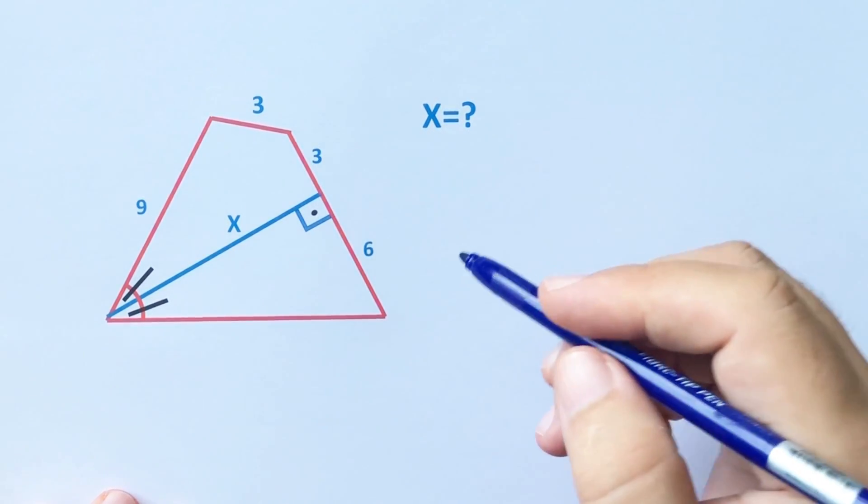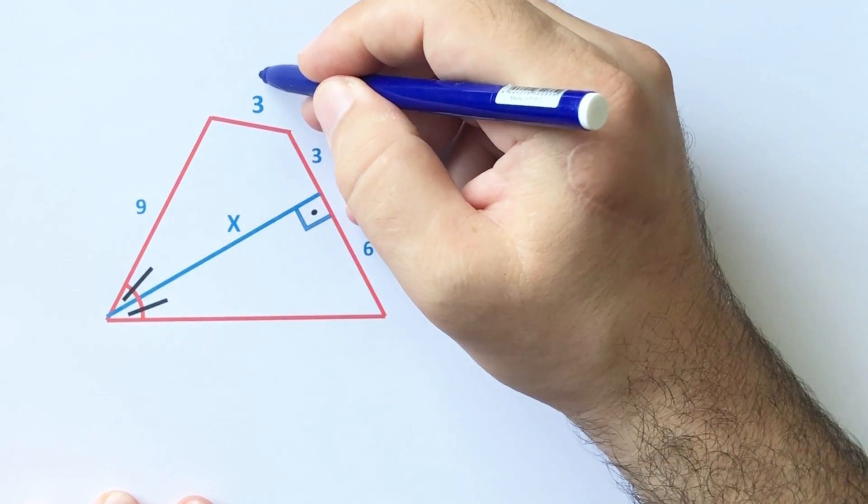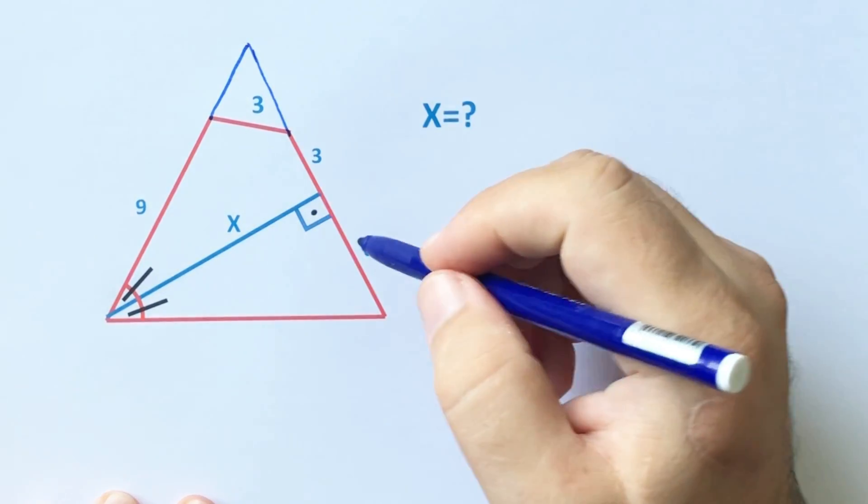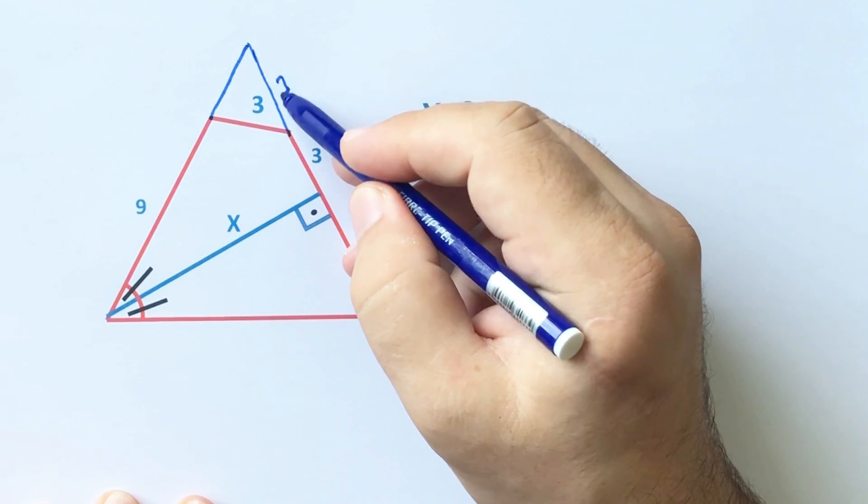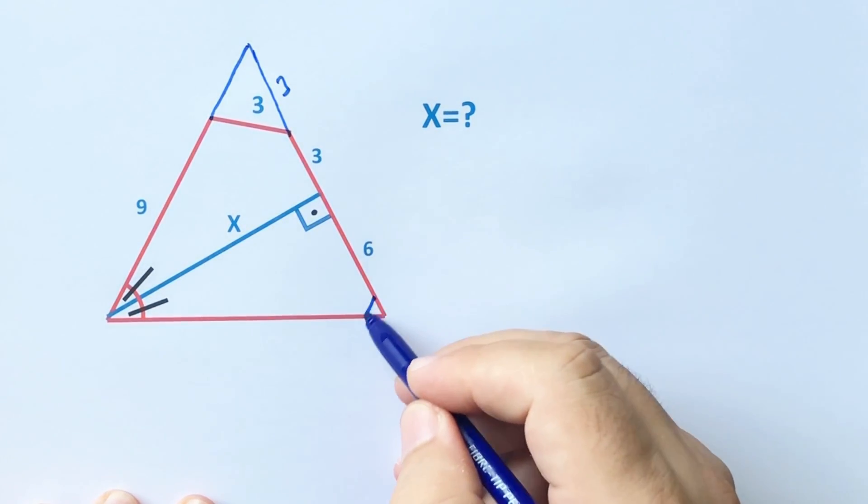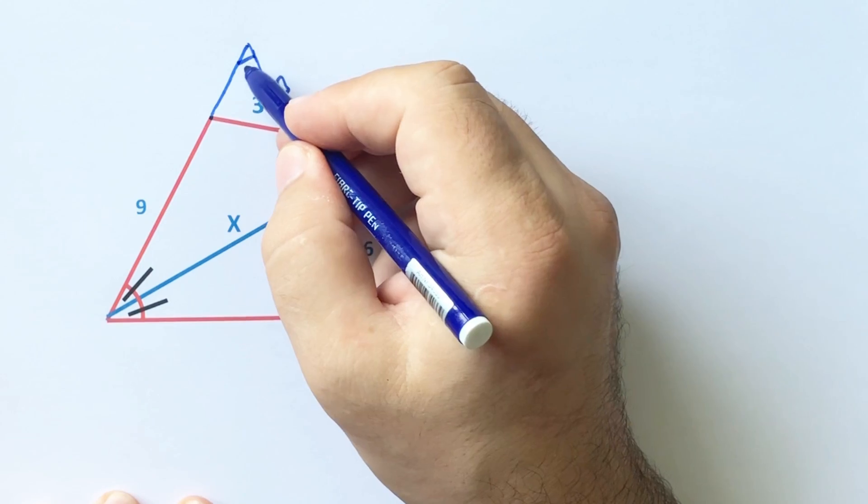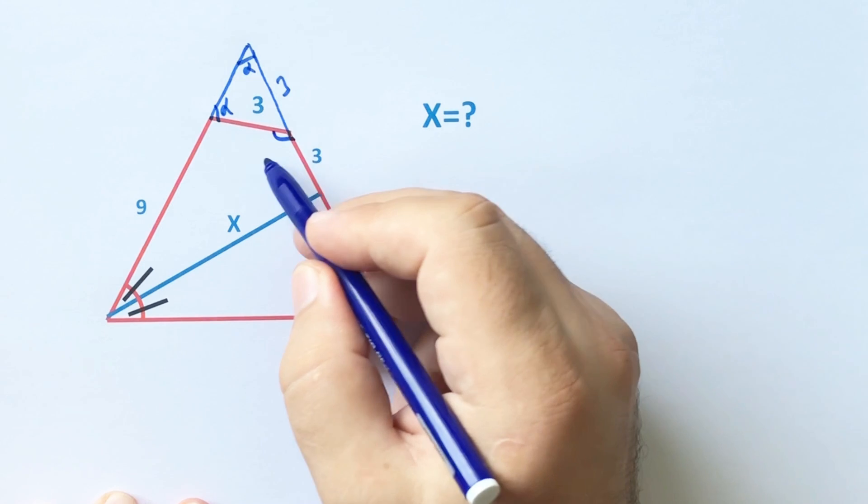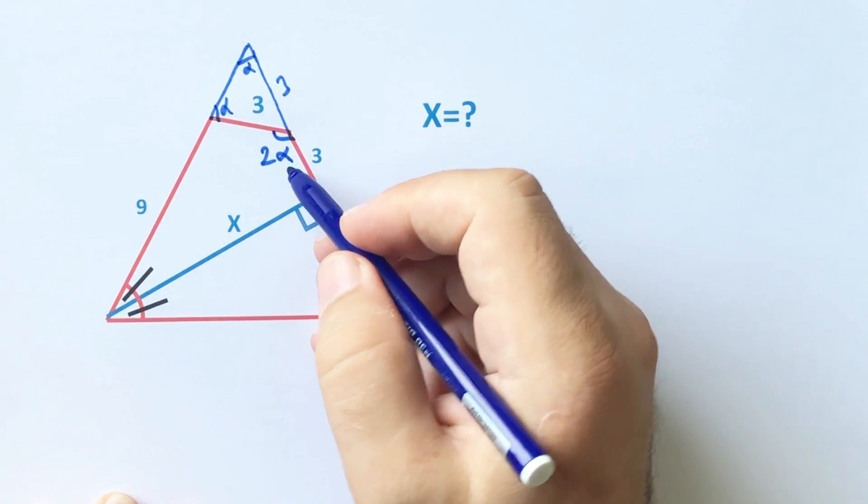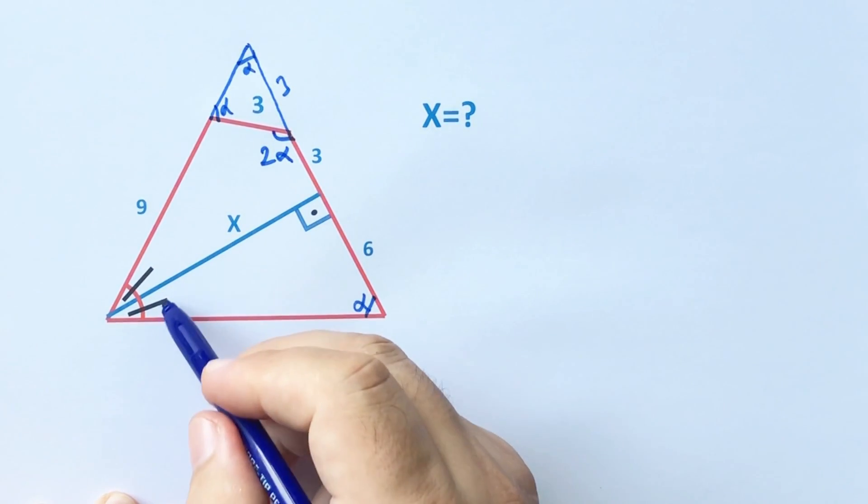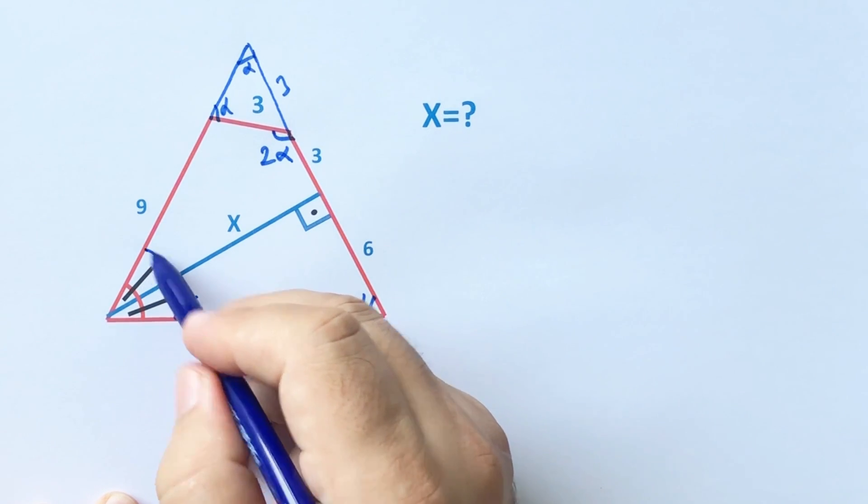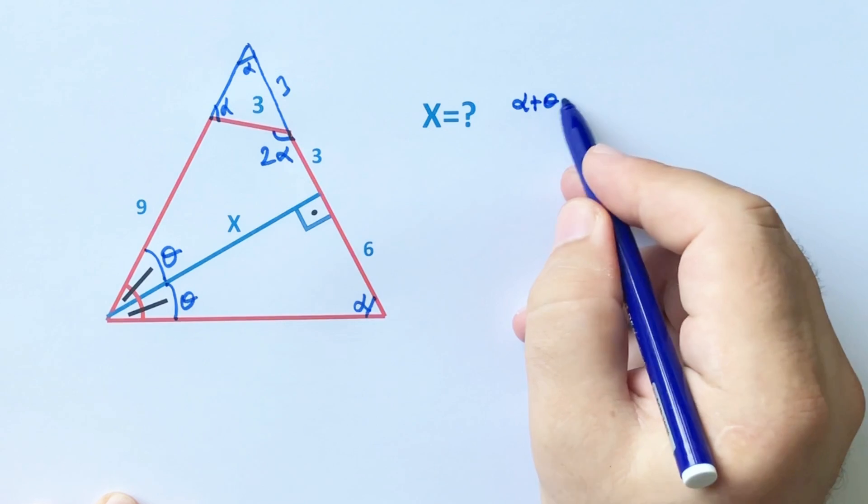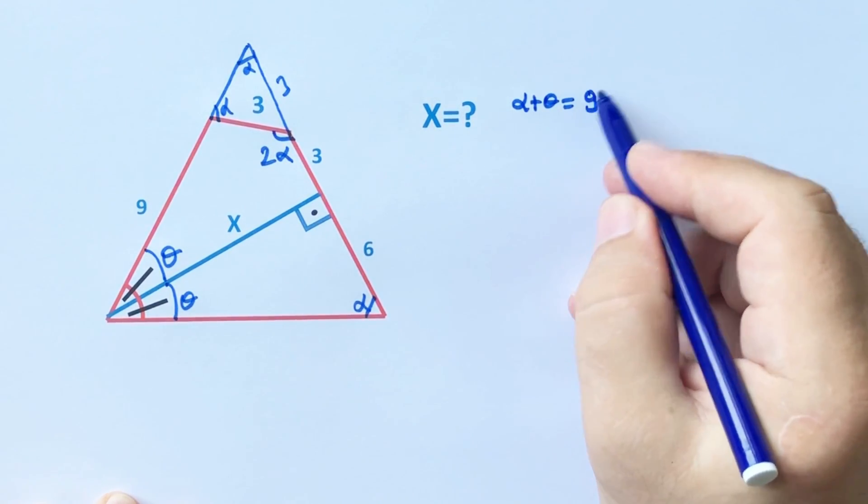Now we will calculate value of x using the second method. We know that if we extend here, we get an isosceles triangle. So here is 3, and let's call here alpha. This angle must be alpha, and this angle is also alpha. We know that two interior angles equals one exterior angle. Let's call here theta.